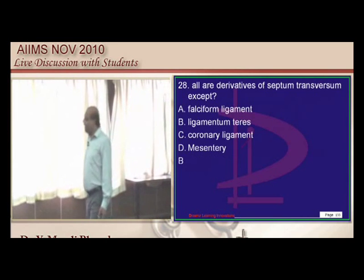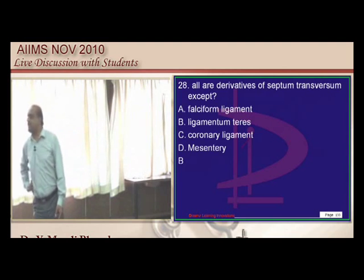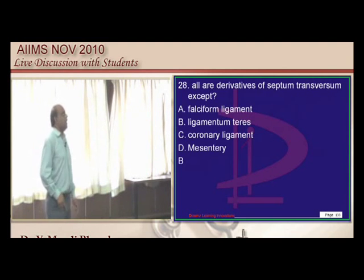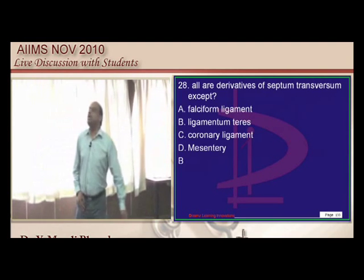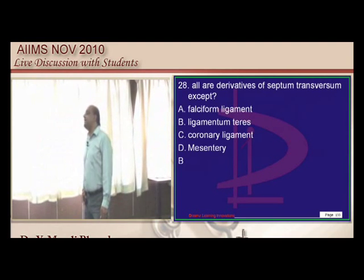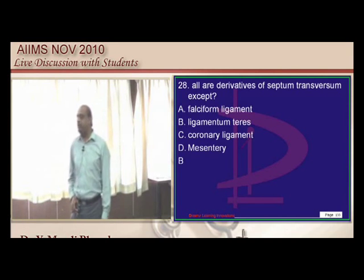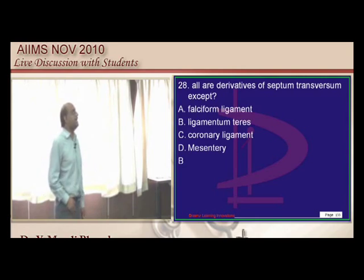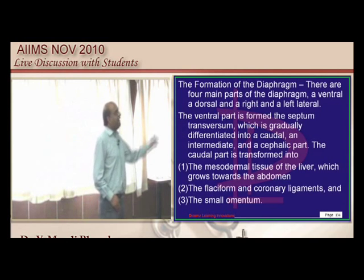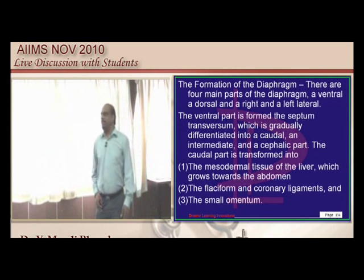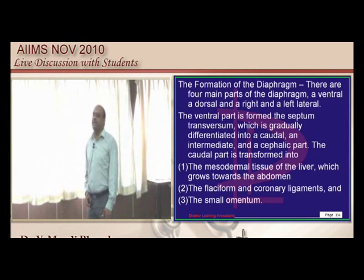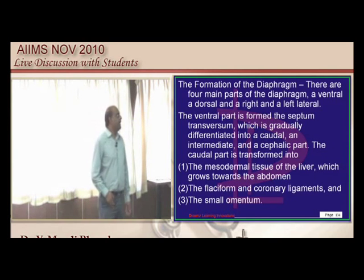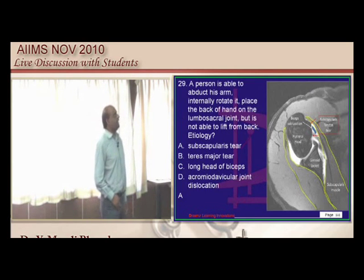What are the derivatives of the septum transversum? All the structures associated with it — but not ligamentum teres. Ligamentum teres is basically a derivative of the umbilical vein which becomes redundant and is called ligamentum teres.